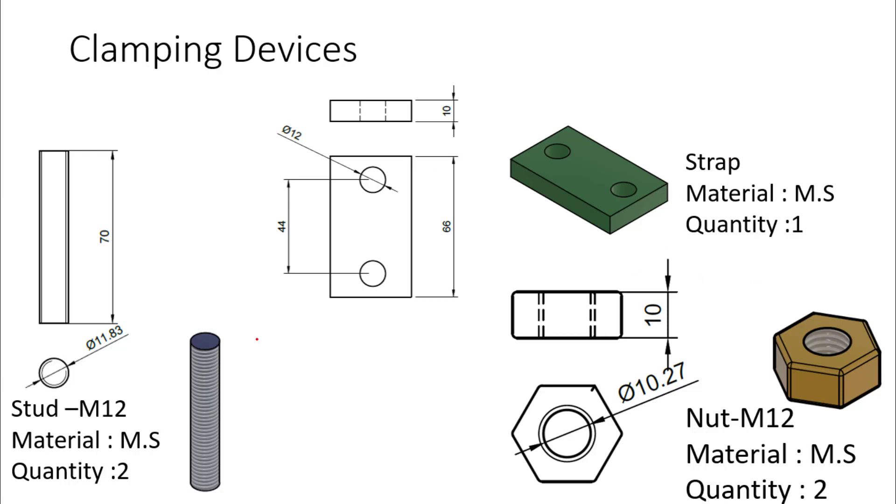Clamping devices are used here. We need to make sure that we have two studs of M12, which means there is metric thread in 12mm diameter of this stud, and material is also mild steel. Two quantity of studs are used. Length of the stud is 70mm. Here we need to remember that length must be enough to accommodate the fixture plate and height of the component, and also we will assemble strap on that stud and also on that strap we will assemble nut, so we need to recommend length of 70mm.